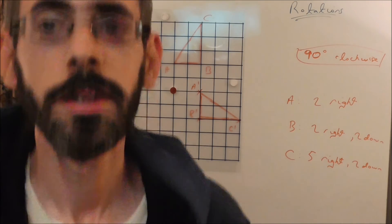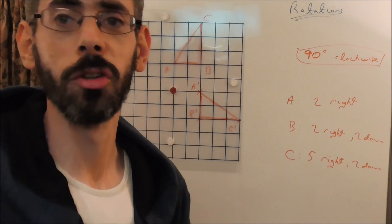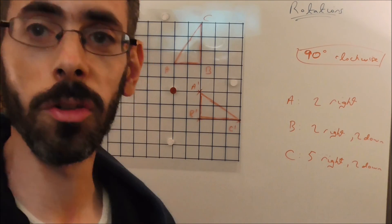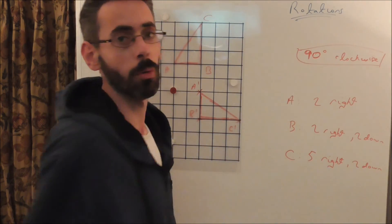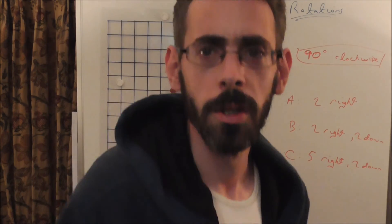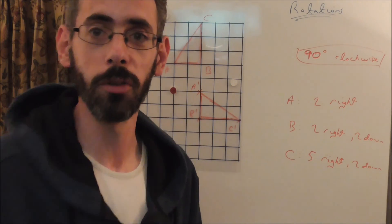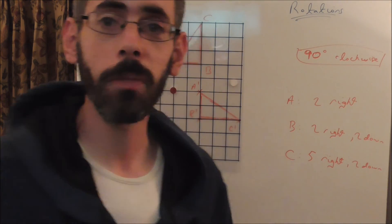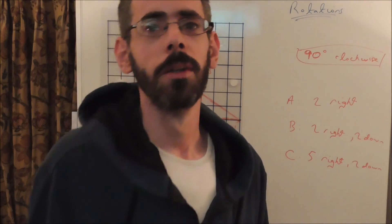Right, that's the end of the lesson. We've covered 3 methods for rotating shapes on a grid. Method 1 was using tracing paper. Method 2 was that really quick method for 180 degree rotations. And Method 3 was a good method for 90 degrees clockwise or anti-clockwise. I'm going to put a couple of shapes up on the board for anyone who wants to practice — you can pause the video, have a go at rotating the shapes, and then look at the answers.